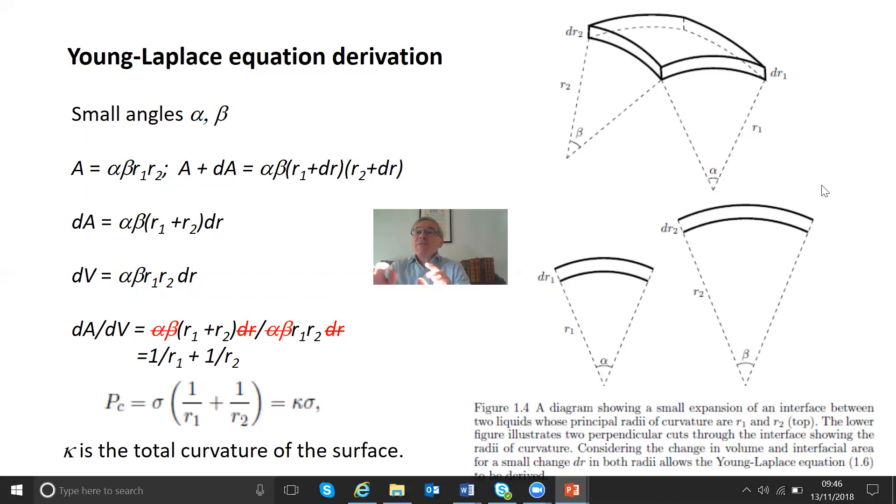So the area of the interface here is just the two radii of curvature R1, R2 times those angles, α, β, R1, R2. That's just true of any small interface. Those are the radii of curvature. If you think about it in just the arc of a circle, it's the angle times the radius. If you're taking a two-dimensional interface, it's just the two angles, it's two-way.